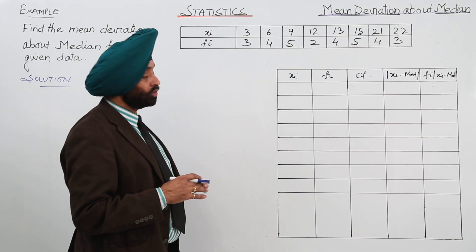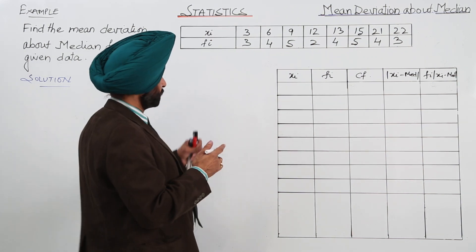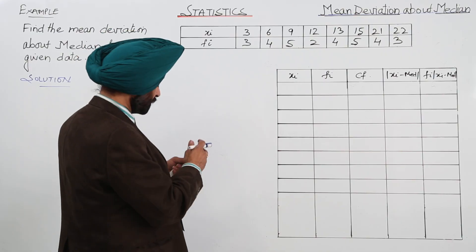Now we have to find mean deviation about median with the given data. Now this is the ungrouped one.